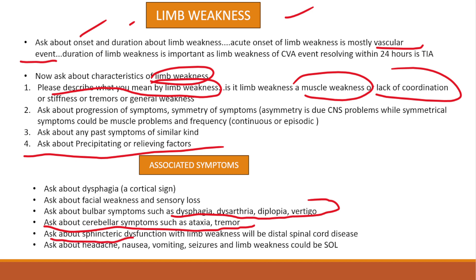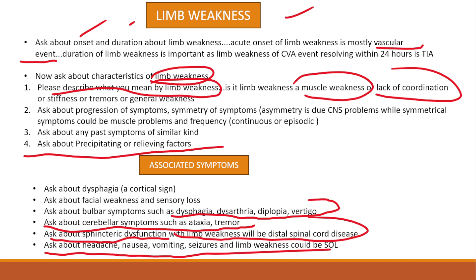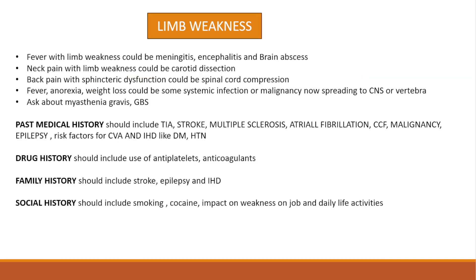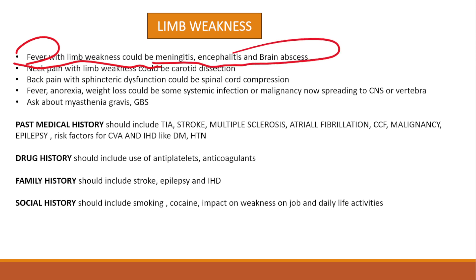If the patient is having problems with sphincters — such as urinary and fecal incontinence or retention — combined with limb weakness, it can indicate spinal cord disease. If the patient complains of headache, nausea, vomiting, seizure, and limb weakness, it can be a space-occupying lesion in the brain. If the patient has weakness accompanied by fever, it could be meningitis, encephalitis, or brain abscess.